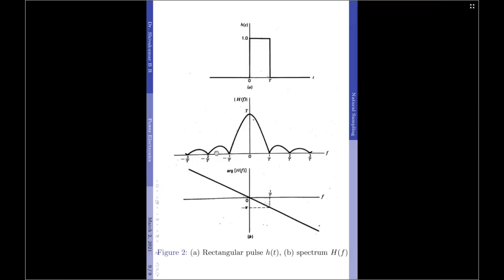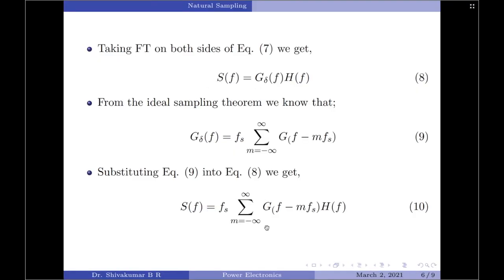The Fourier transform of h(t) gives H(f) = T sinc(fT) times exponential of minus j*pi*f*T. The amplitude and phase responses of H(f) are shown in the diagram. Coming back to the sampled signal, we see that flat top sampling introduces both amplitude distortion and a delay of T/2. The distortion caused by the lengthening of the samples is called the aperture effect.